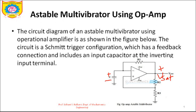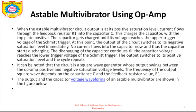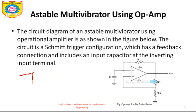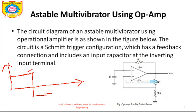The capacitor charges with the top plate positive until the voltage reaches the upper trigger voltage of the Schmitt trigger. At this point, the output of the circuit switches to its negative saturation voltage. Once the output is at negative saturation, the capacitor discharges toward the negative saturation value. Then it charges again to positive saturation, then discharges to negative saturation, and this process continuously repeats.